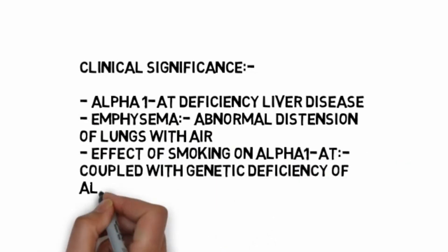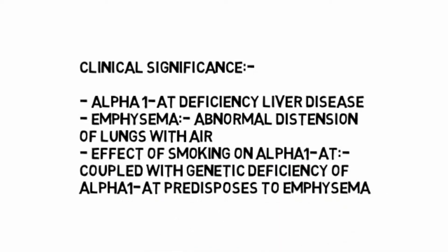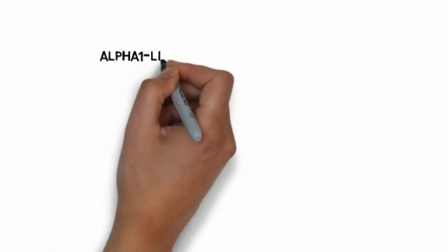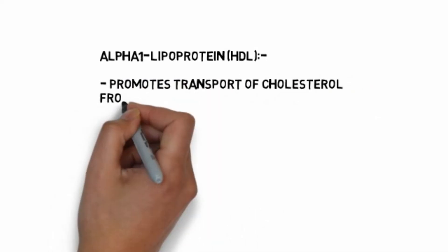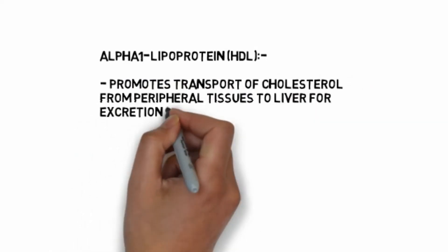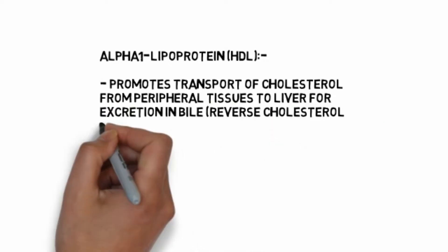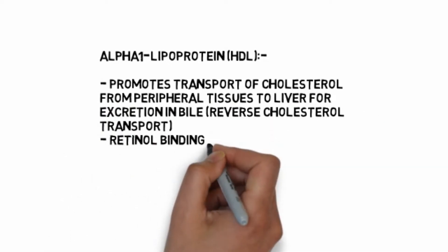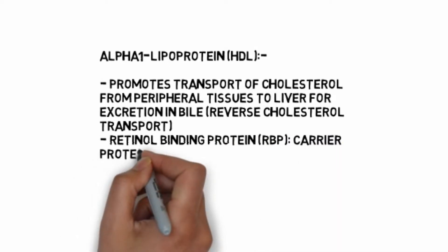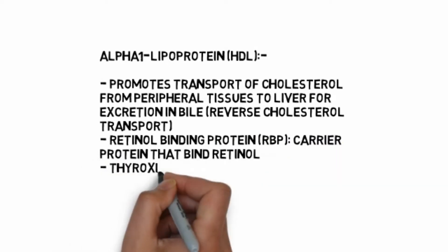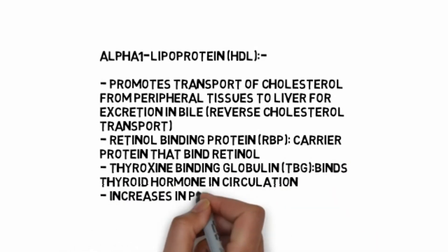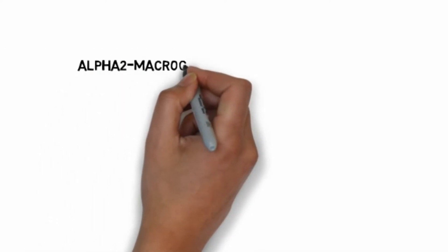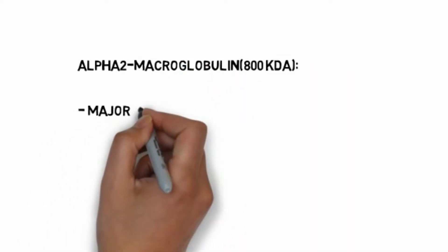Alpha-1 lipoprotein, HDL (high-density lipoprotein), promotes transport of cholesterol from peripheral tissues to liver for excretion in bile through reverse cholesterol transport. Retinol binding protein is a carrier protein that binds retinol. Thyroxine binding globulin binds thyroid hormone in circulation and increases in pregnancy.